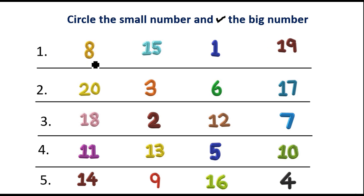First one: 8, 15, 1, 19. Which is small? 1. So circle 1. Which is big? 19. So tick 19.